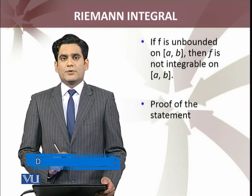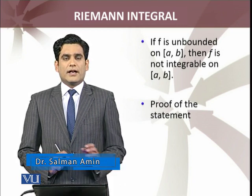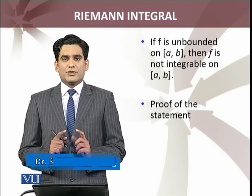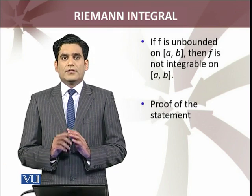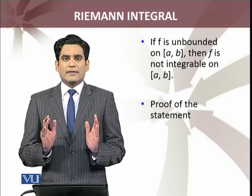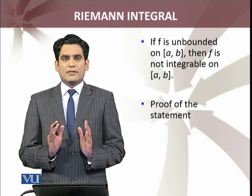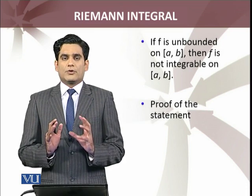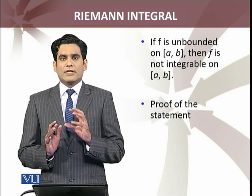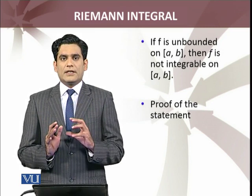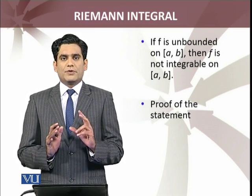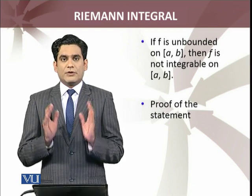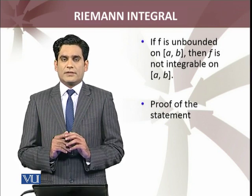Indeed, what is the idea of the proof? We will show that for any two Riemann sums of this function, the difference of these two Riemann sums in absolute value is always greater than or equal to some number. For any epsilon, there is a partition on which we can have two different Riemann sums whose difference in absolute value is always greater.